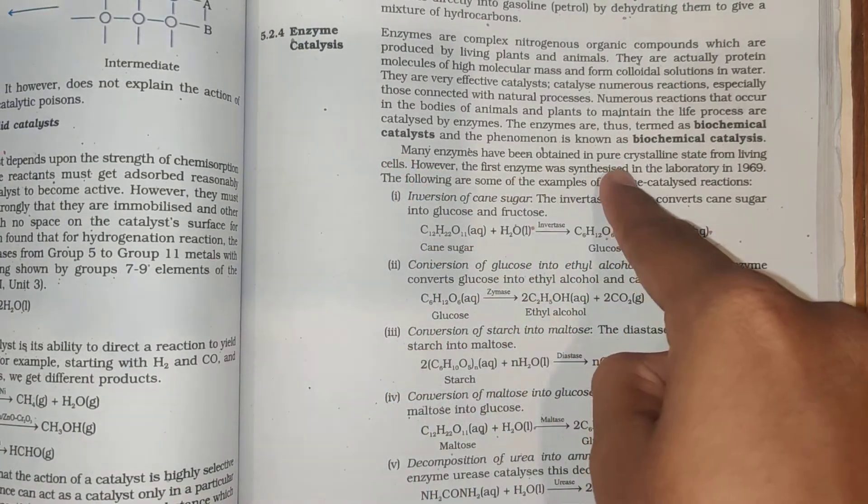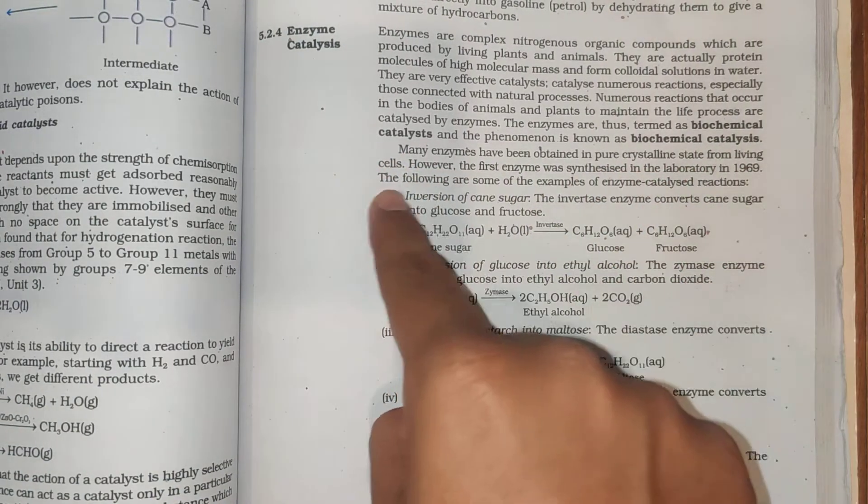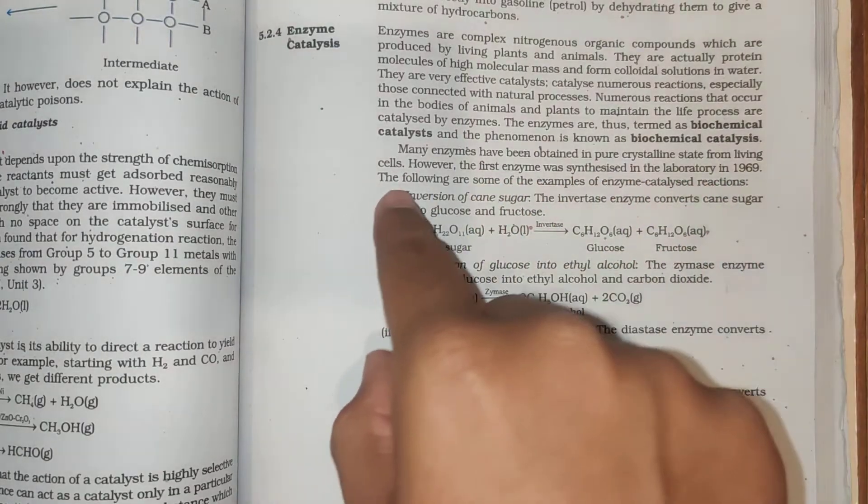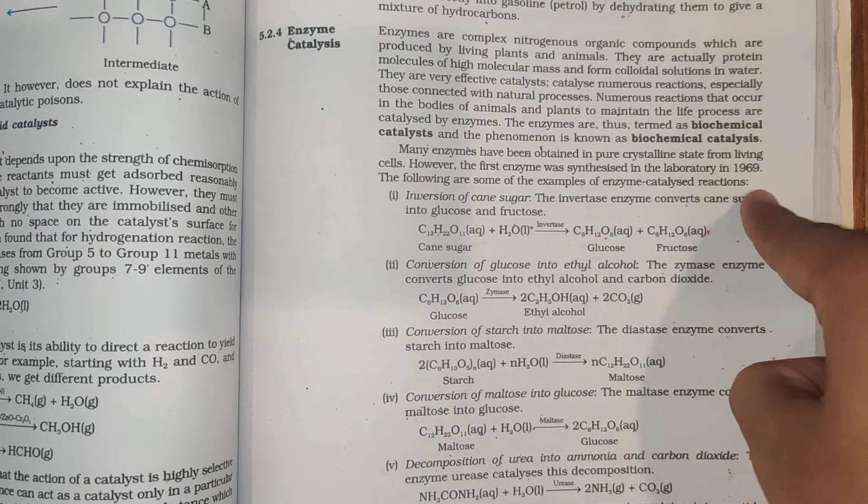Many enzymes have been obtained in pure crystalline state from living cells. However, the first enzyme was synthesized in the laboratory in 1969. The following are some examples of enzyme-catalyzed reactions.